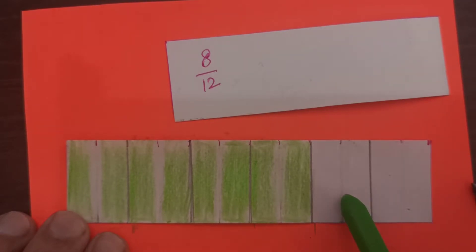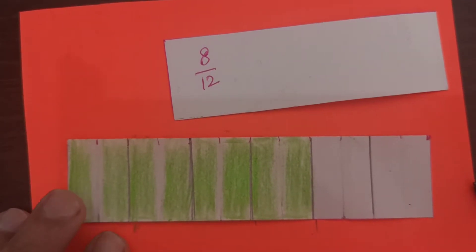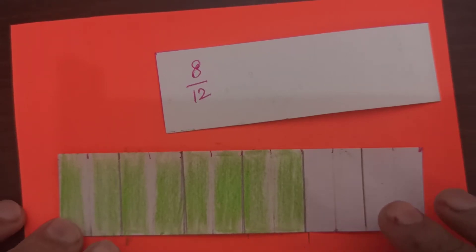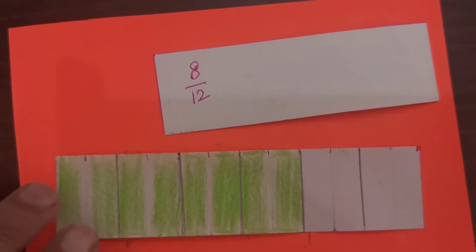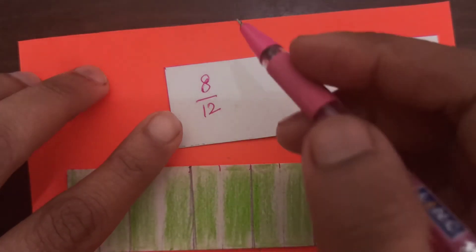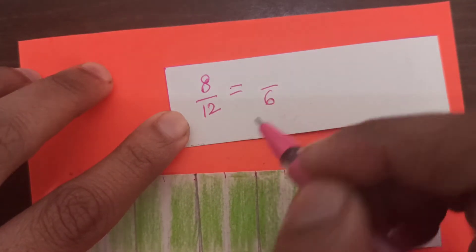What are the total number of parts? 1, 2, 3, 4, 5, 6. Earlier, it was 12. Now, the total number of parts are 6. So, let me write it down over here. Now, the total number of parts is 6.